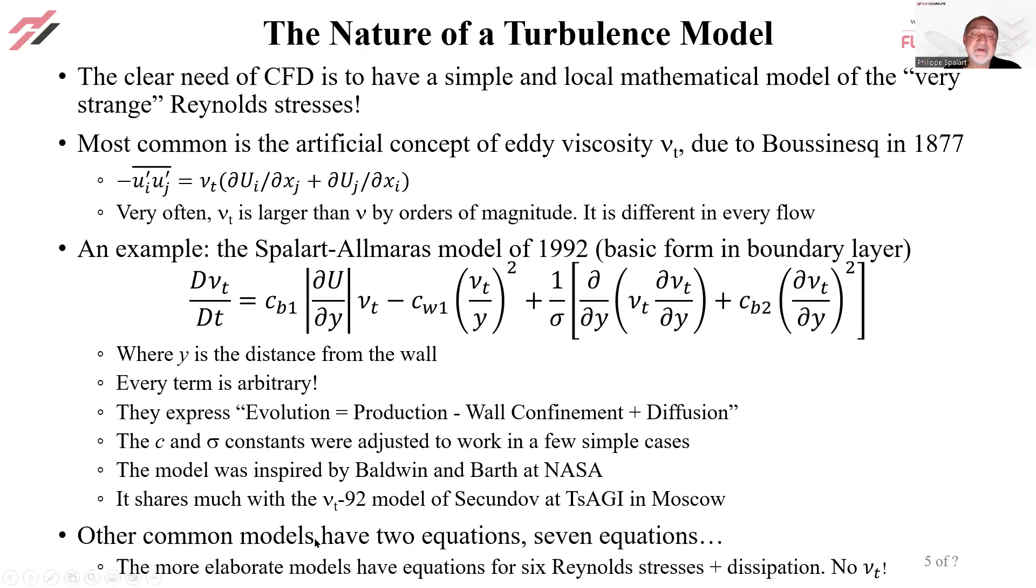Other common models have two equations, like k-epsilon, k-omega, and seven equations. That's the more elaborate models. They directly have equations for the Reynolds stresses and one for the dissipation. There's no eddy viscosity. So I'll get back to those later.